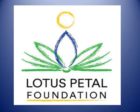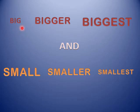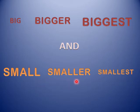So children, we have learned in the previous class that big things and small things are what they are. But children, some things are bigger than big things and some things are smaller than small things. So today we are going to learn how to compare different sizes together. It means, big things se bhi zada jo big hai, wo bigger hai. Aur jo sab se zada big hai, wo biggest hai. And small things se bhi zada jo small hai, wo smaller hai. Aur jo sab se zada small hai, wo smallest hai.